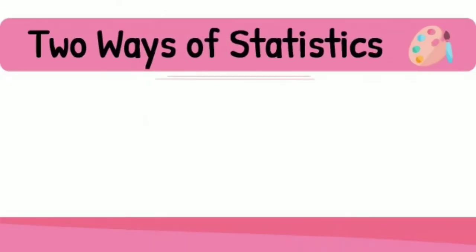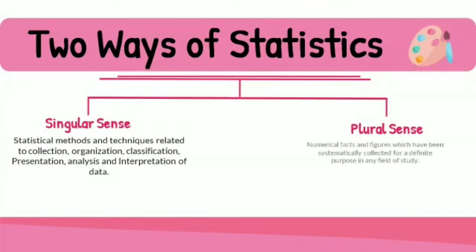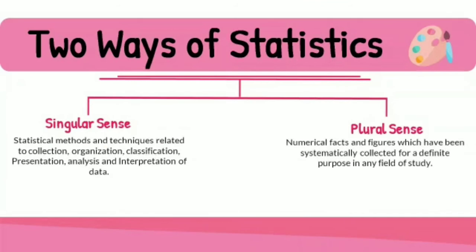There are two types of statistics: in singular sense and plural sense. In singular sense, it refers to statistical methods and techniques related to collection, organization, classification, presentation, analysis, and interpretation of data. In plural sense, it includes numerical facts and figures which have been systematically collected for a definite purpose in any field of study.